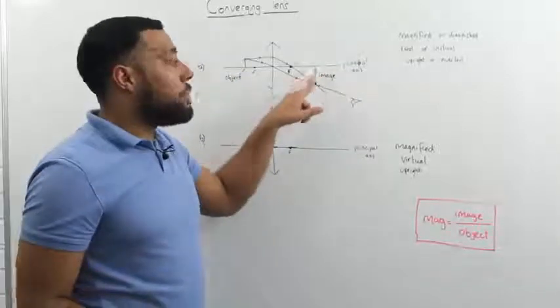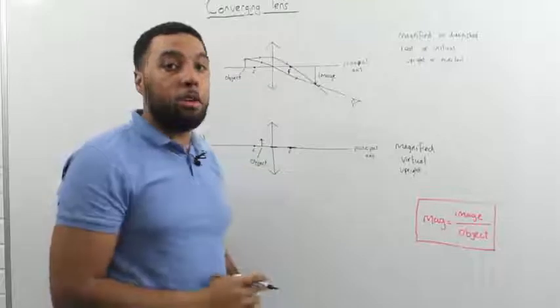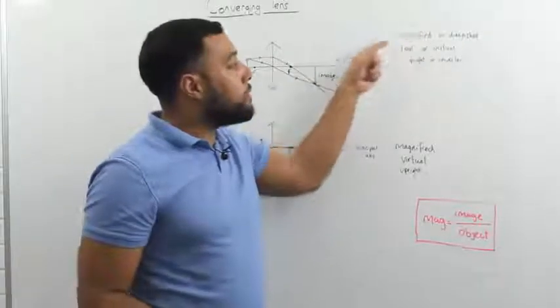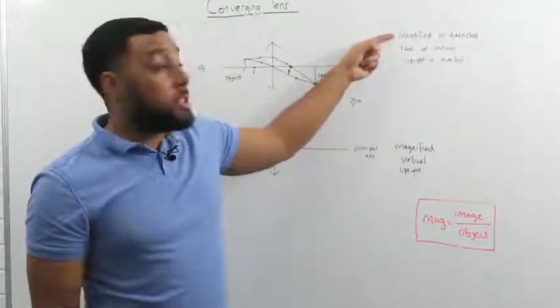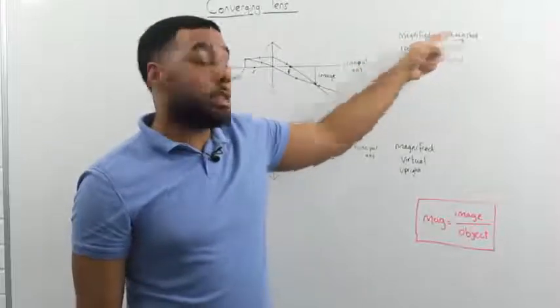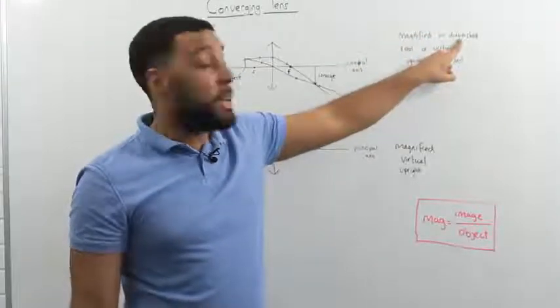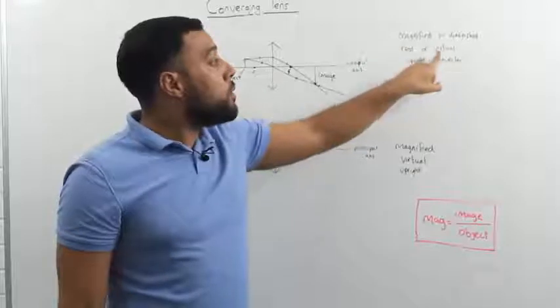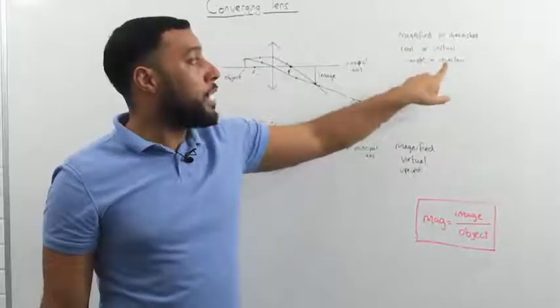Now we can describe that image using some key words. And these are the ones that you'd have to use in your exam. Whether the image is magnified or diminished. Whether it's bigger or smaller basically. If it's real or virtual. Or if it's upright or inverted.